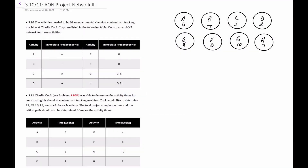Hello there. In this video I'll demonstrate how to draw an activity on node or AON project network and also to determine what the earliest start and finish times and the latest start and finish times are, as well as identifying any slack and what the critical path is. This example is based on problems 3.10 and 3.11 in your text, combined into one video. We have eight tasks ranging from activity A through H, with predecessor relationships and completion times in weeks. Our first objective is to construct an AON network for these activities.